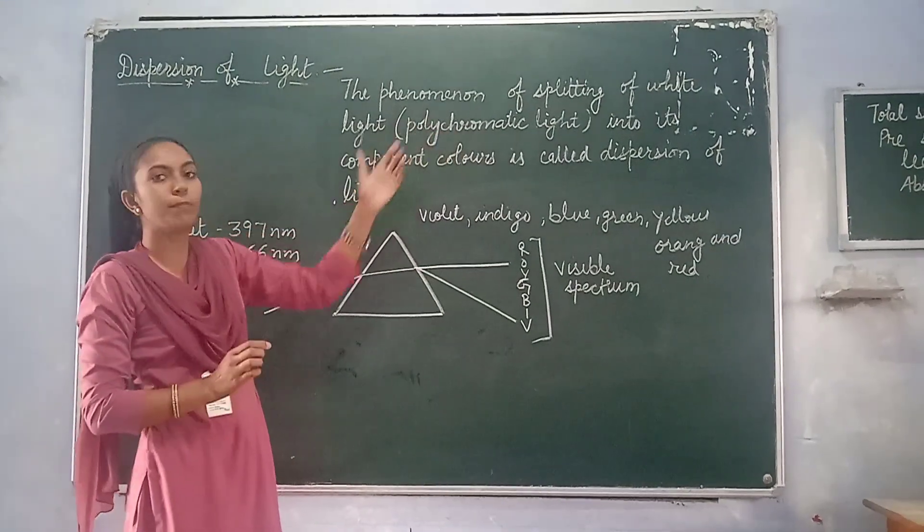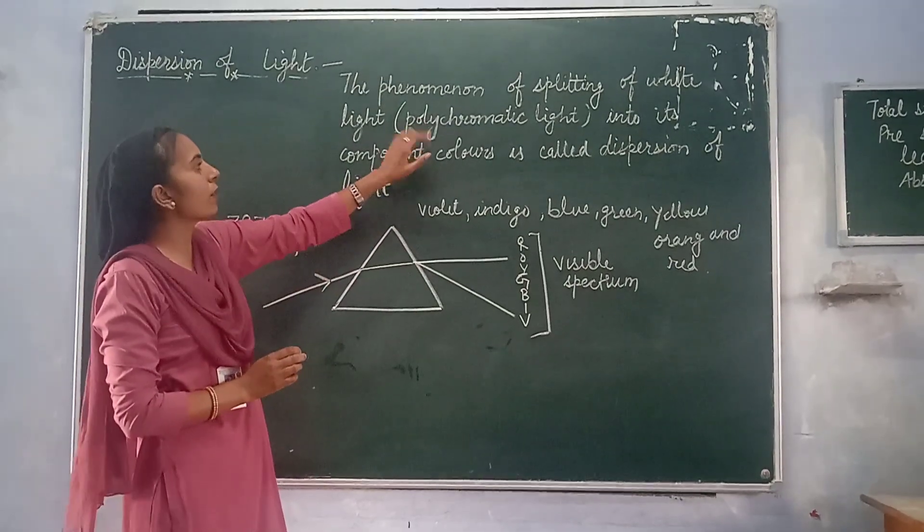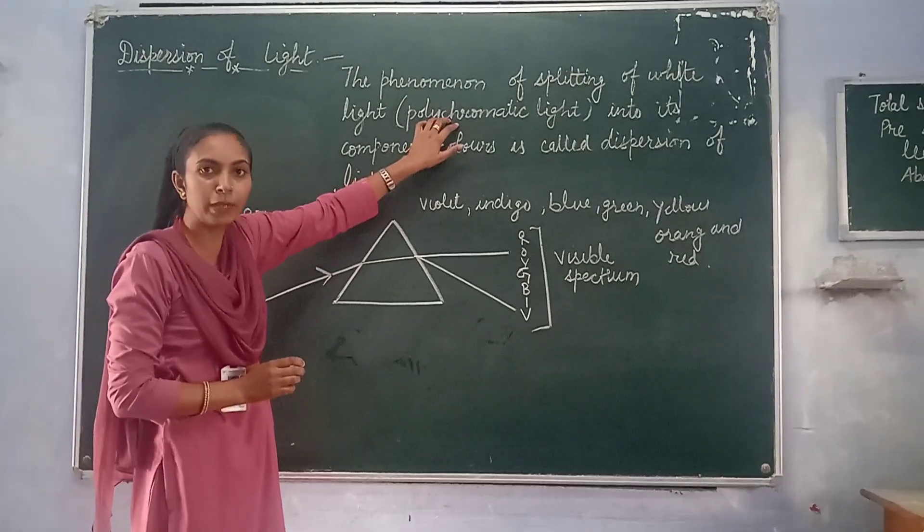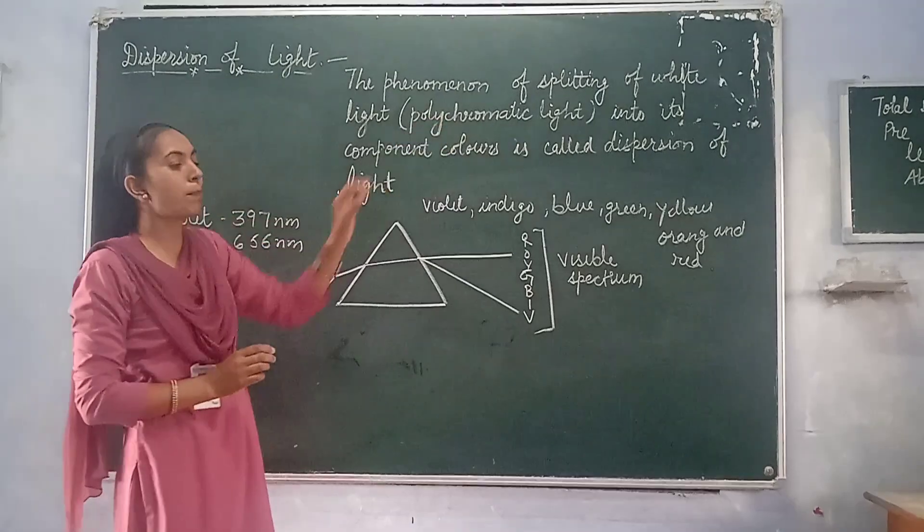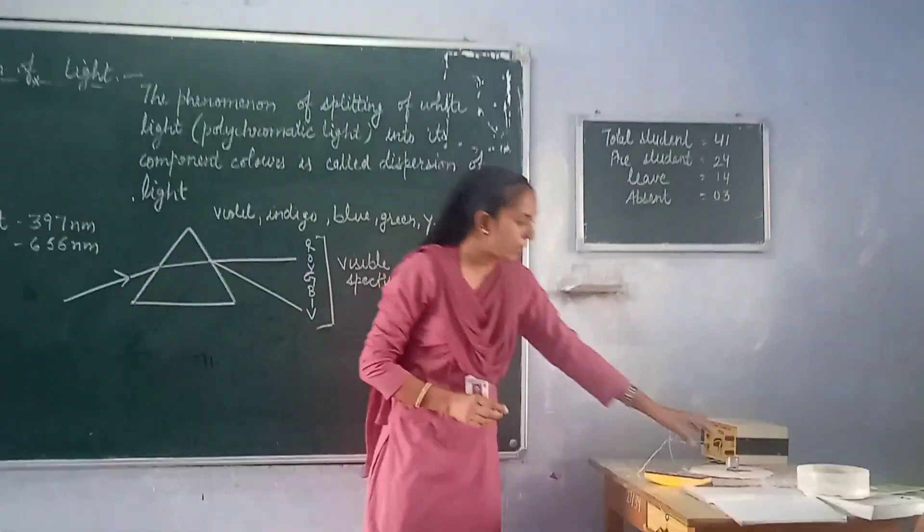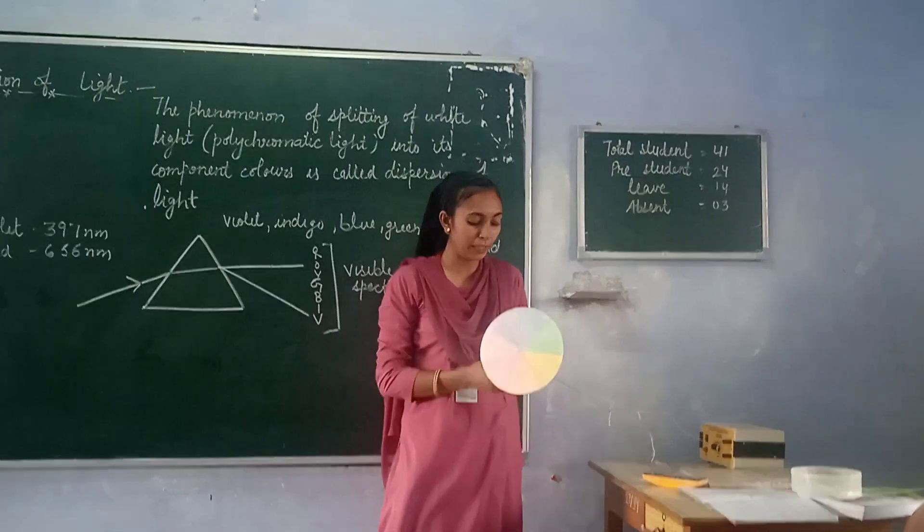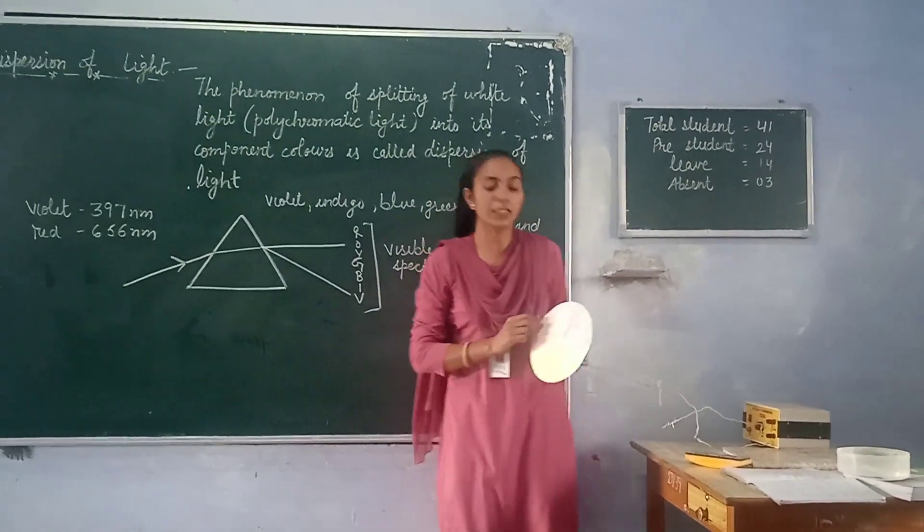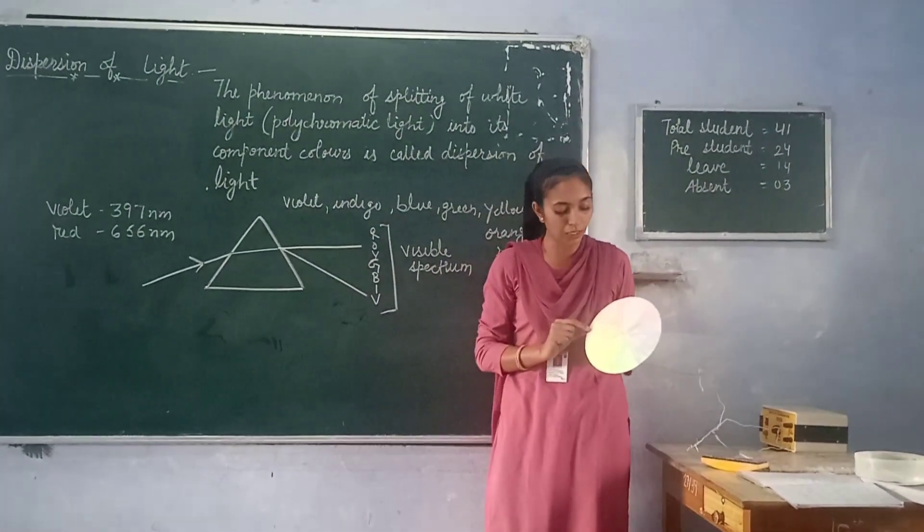Because it consists of many colors, that is why white light is also called polychromatic light. And Newton, this is a practical demonstration of this experiment. What he did, he just painted a card or sheet with seven colors.